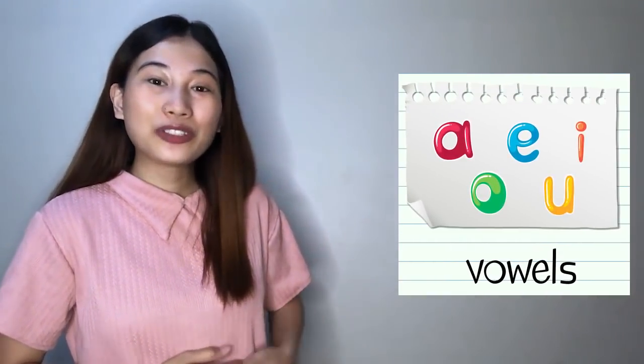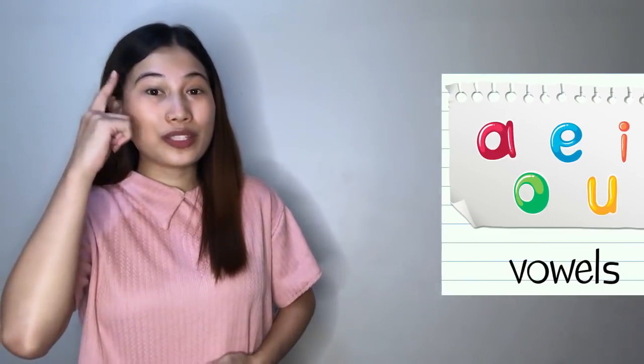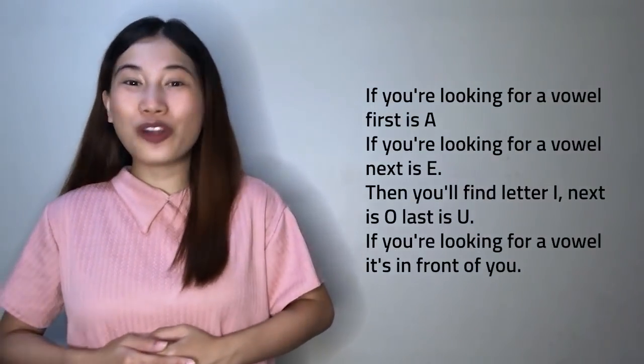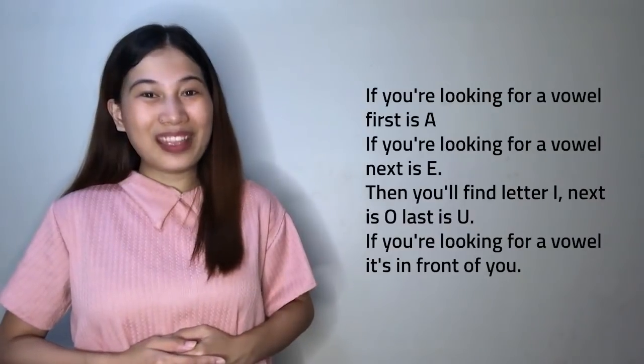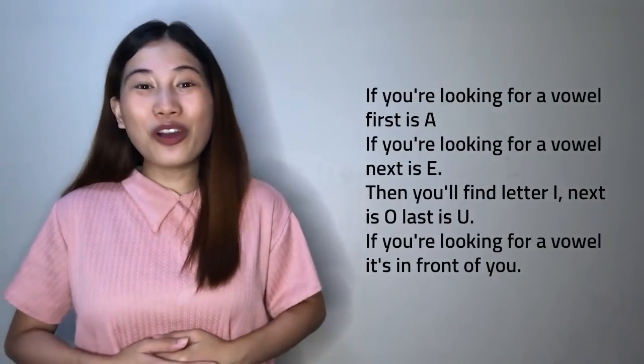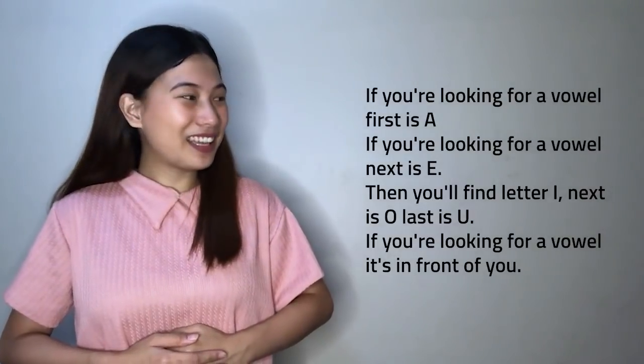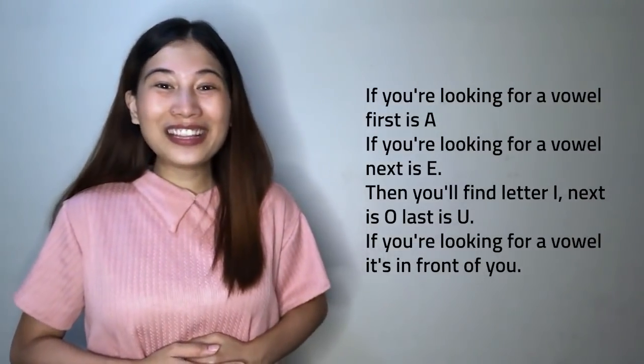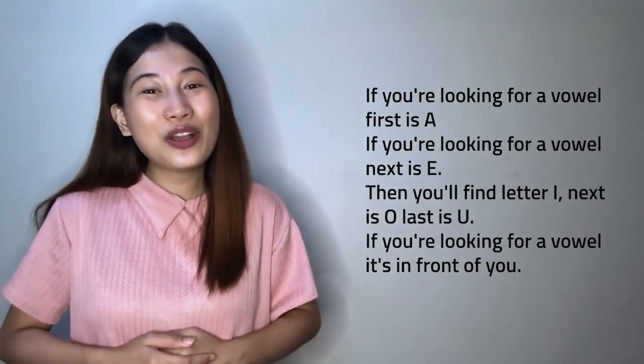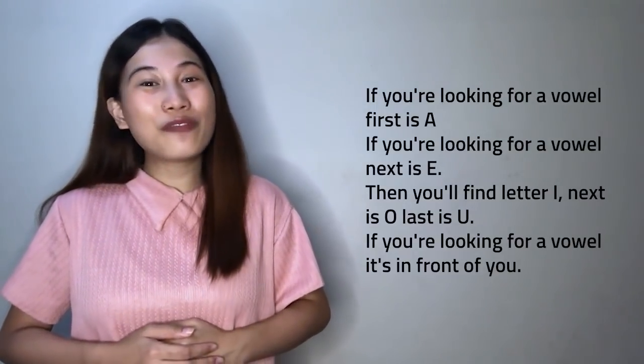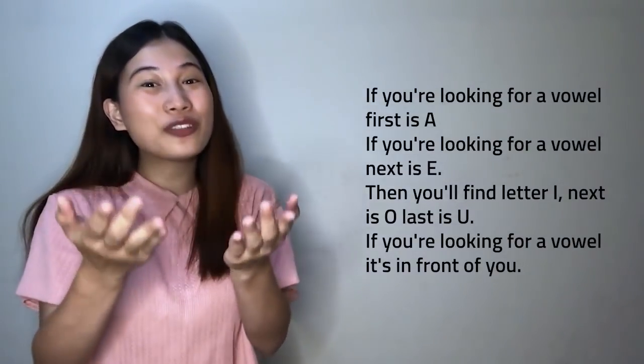Before we go, our vowel family would like to remind us to always remember them. They'd like us to sing a song with them. Come, join us! If you're looking for a vowel, first is A. If you're looking for a vowel, next is E. And then you'll find letter I. Next is O, last is U. If you're looking for a vowel, it's in front of you.